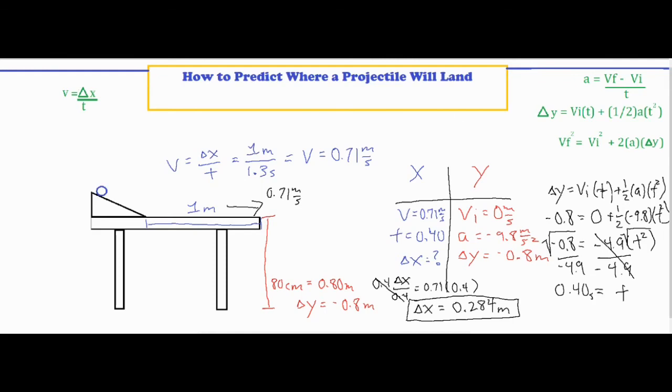So I plugged in my velocity of 0.71 meters per second that I found earlier. I set that equal to delta x over t, the t being 0.4, multiply both sides by 0.4, and I got an answer of 0.284 meters.